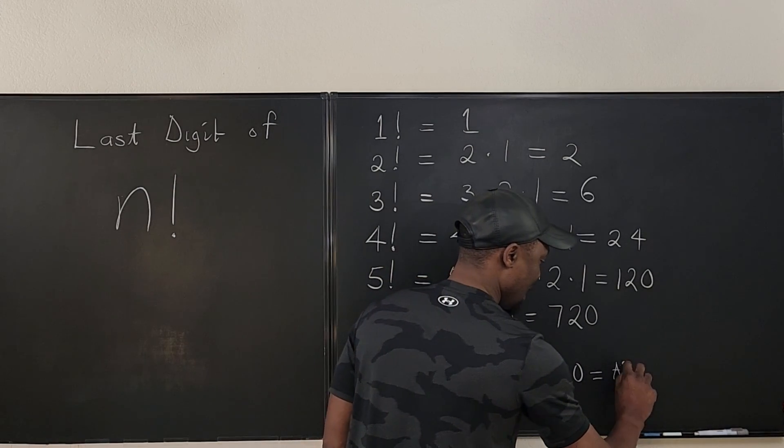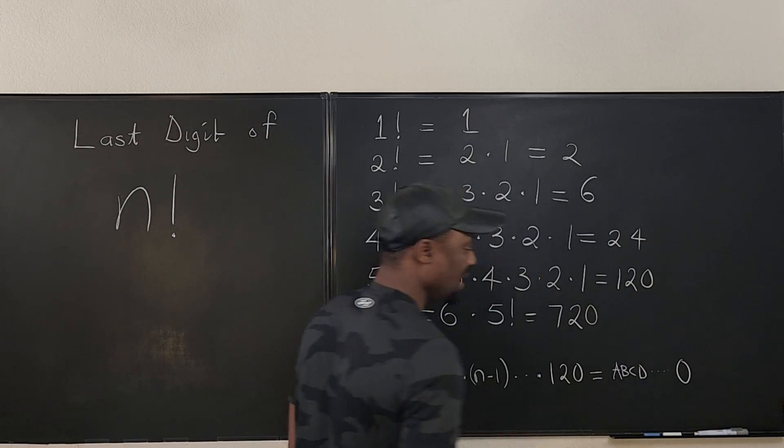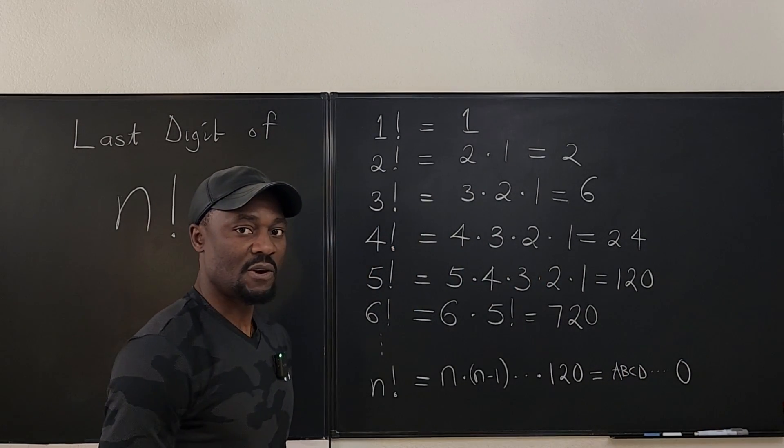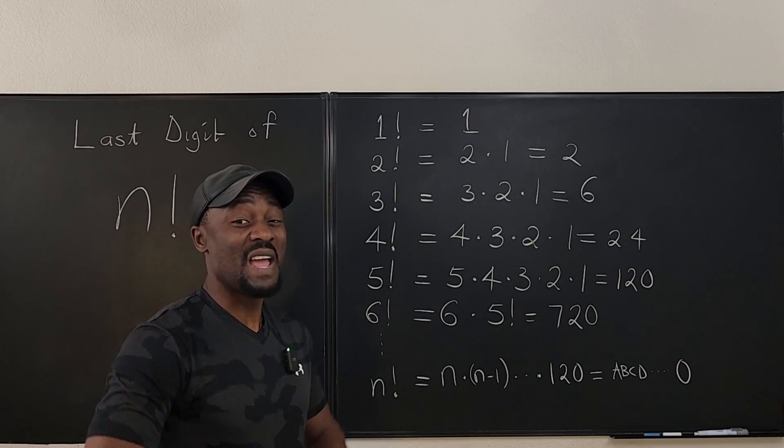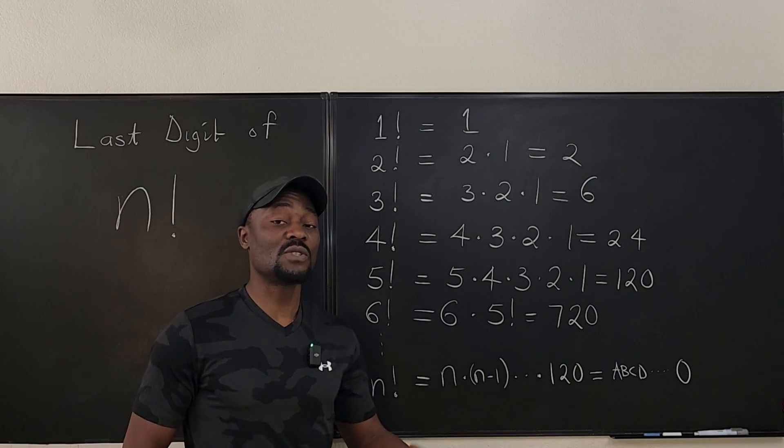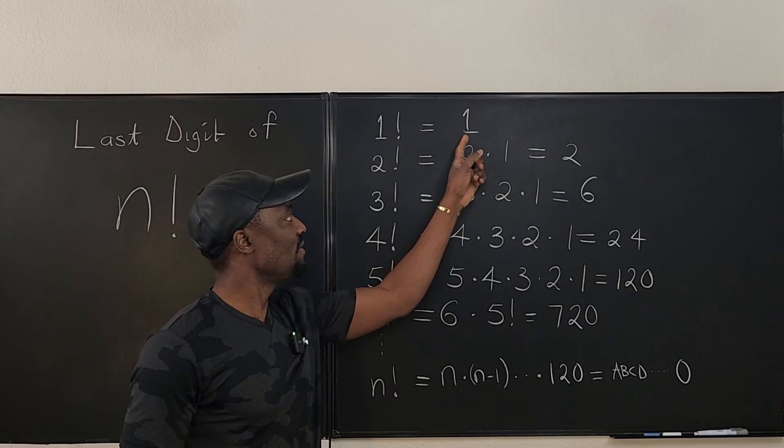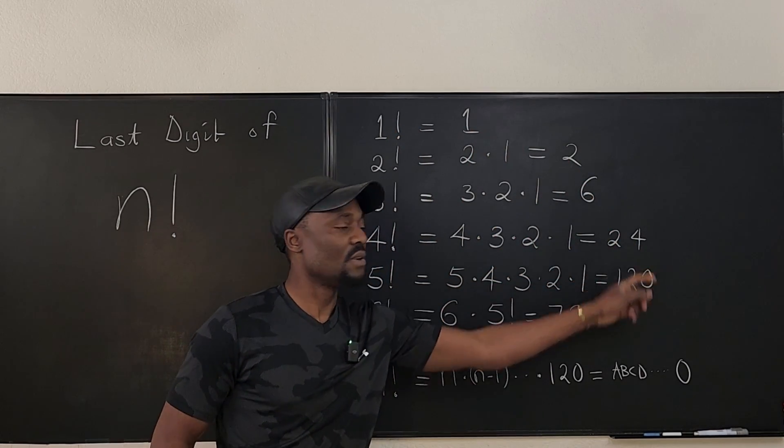So we can call it A, B, C, D, but the last digit is going to be zero. So the last digit of any factorial such that n is greater than or equal to five is zero. And if it is not, then it has to be one of these: one, two, six, or four.